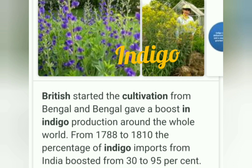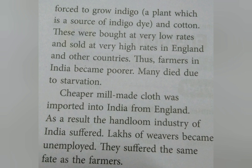The farmers were forced to grow only indigo and cotton. These crops were bought at very low rates and sold at very high rates in England. Many farmers died due to starvation because they could not grow rice or wheat — they had to grow indigo, they had to pay taxes, they had nothing to eat and they died.